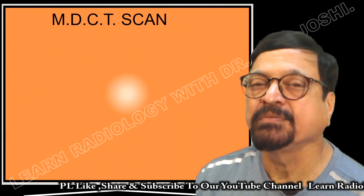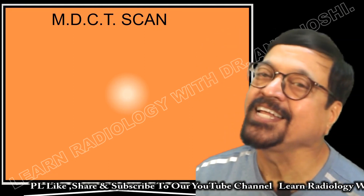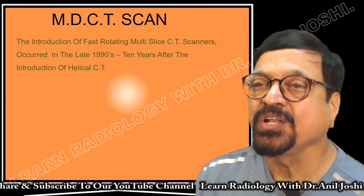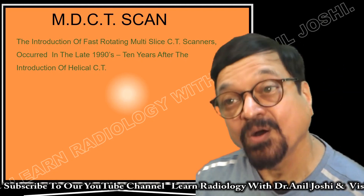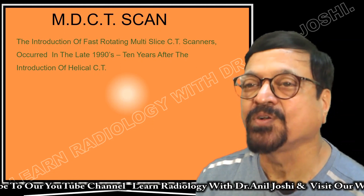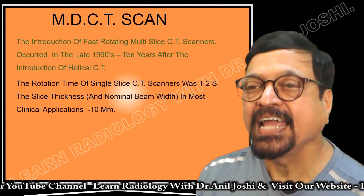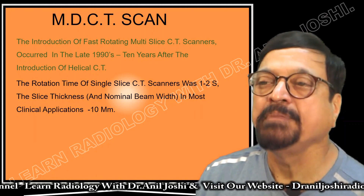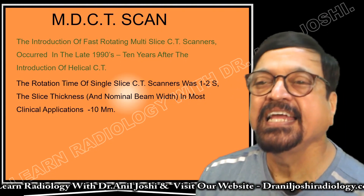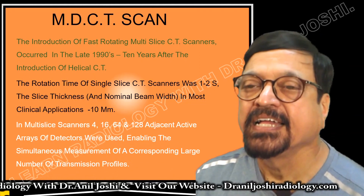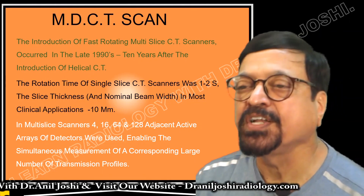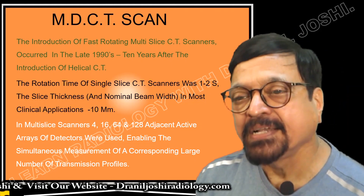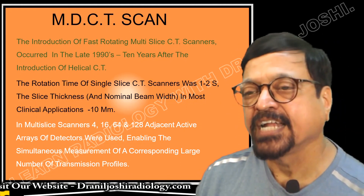These two differences make it faster, better, good for reconstruction, and good for the patient because we don't need as much patient cooperation. The introduction of fast rotating multi-slice CT scanners occurred in the late 1990s, ten years after the introduction of helical CT. The rotational time of the single-slice CT scanner was 1 to 2 seconds, with a slice thickness and beam width of around 10 mm in clinical application. In multi-slice scanners, 4, 16, 64, and 128 adjacent active arrays of detectors were used, enabling simultaneous measurement of a large number of transmission profiles.